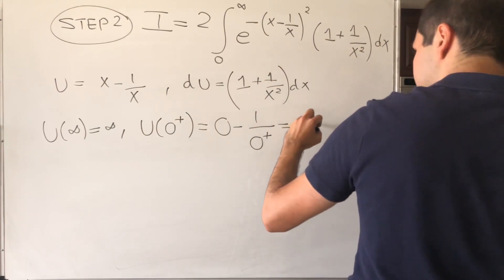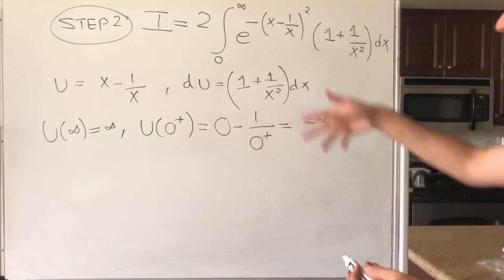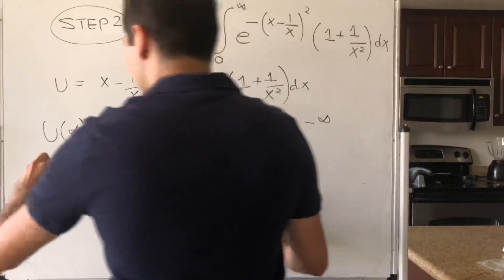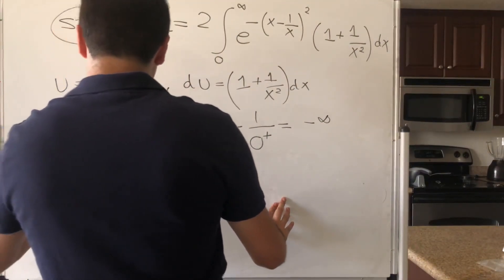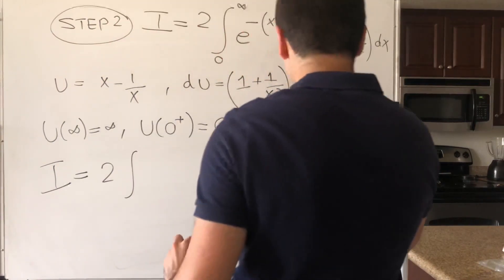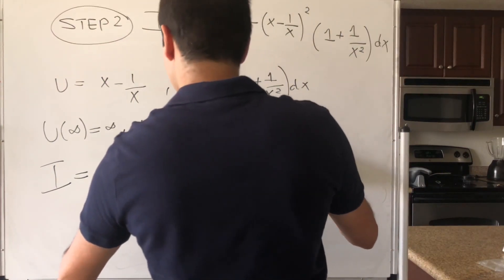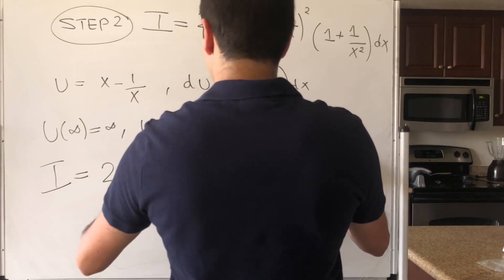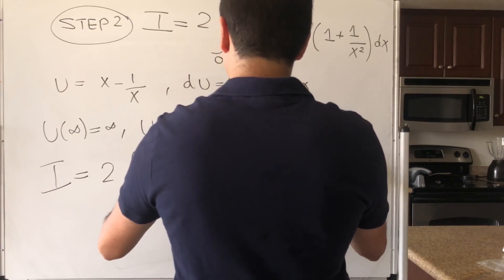So what this integral becomes, i, it's 2 times integral from minus infinity to infinity of e of minus u squared du.